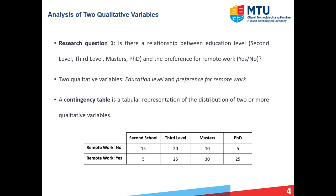Firstly, we have a question where we're interested in the relationship between education level and preference for remote work. This question entails two qualitative variables. Firstly, education level, which has the categories second level, third level, master's, and PhD. And then preference for remote work, which has the categories yes and no.